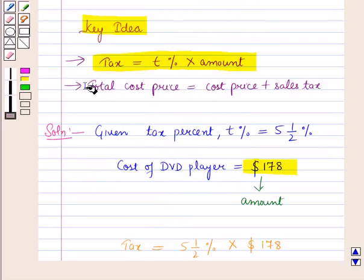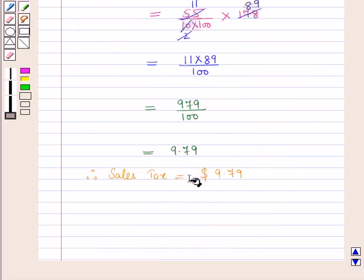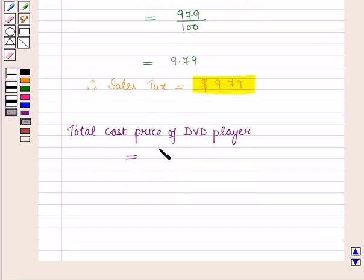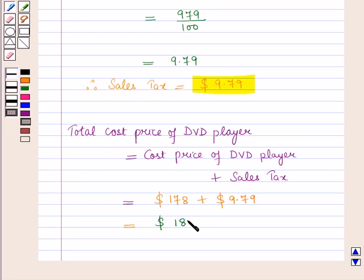Now we have to find the total cost price of the DVD player using the second key result. The cost price of the DVD player is $178, and the sales tax is $9.79. So the total cost price of the DVD player is equal to $178 plus $9.79, which equals $187.79.